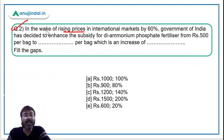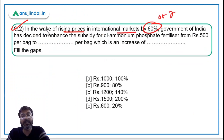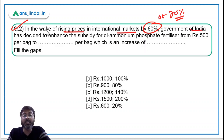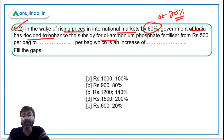In the wake of rising prices in the international market by 60 to 70 percent, the government of India has decided to enhance the subsidy for Di-Ammonium Phosphate fertilizer — which in short is DAP. The question asks: from rupees 500 per bag to how much per bag, and what is the percentage increase? You have to fill in these two gaps.